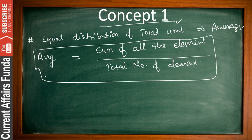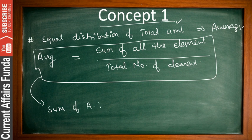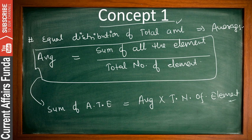From this formula, you can also derive another useful relationship. If you are given the average and the total number of elements, you can easily find the sum of all the elements. So: Sum of all elements equals Average multiplied by Total number of elements. We will use these fundamental concepts to find averages throughout this session.